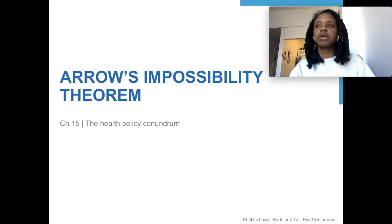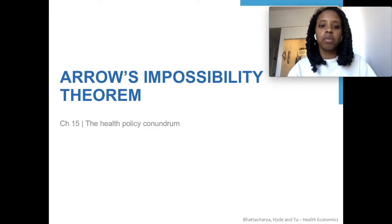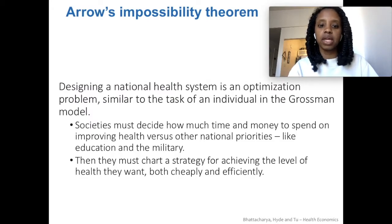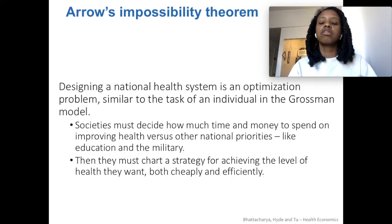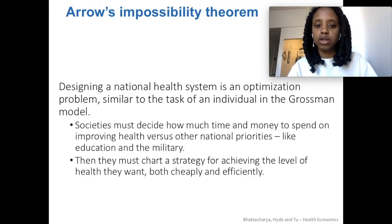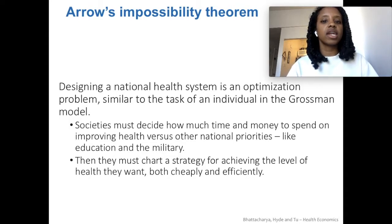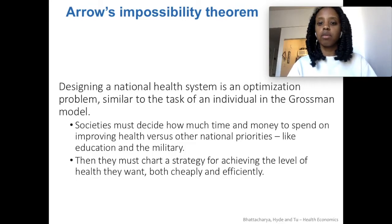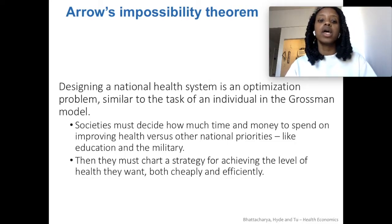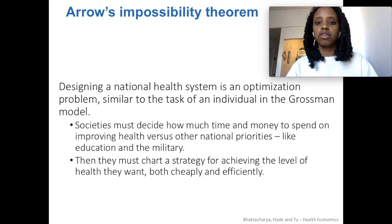One of the first problems with developing a national health policy system is problems with democracy itself, which is explained pretty well by Kenneth Arrow's impossibility theorem. The Arrow impossibility result about designing a national health care system is a problem of optimization, similar to when we studied the individual maximizing under the Grossman model — you have to decide how much time and money to invest in your health based on your preferences and capacity. It's a similar situation at the society level: you have to decide what your optimal allocation towards health care is going to be and find a way to reach that.